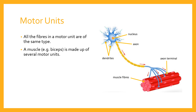A muscle — for example, the biceps — is made up of several motor units. It may be more or less depending on the muscle and its role. But every muscle is made up of several motor units, which means for each muscle there are a whole group of neurons needed to innervate that muscle.